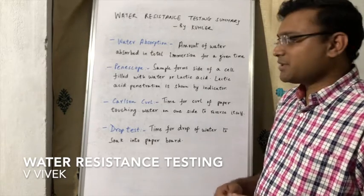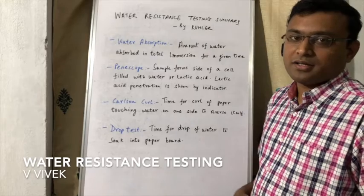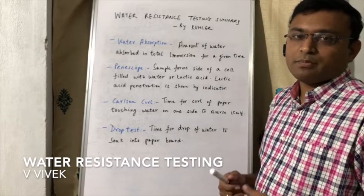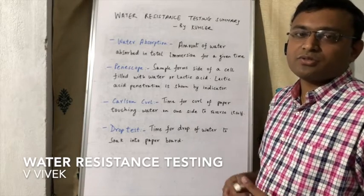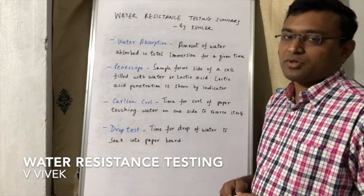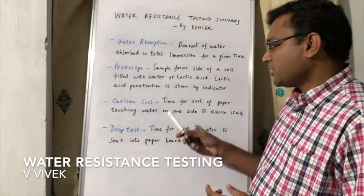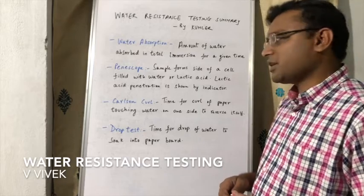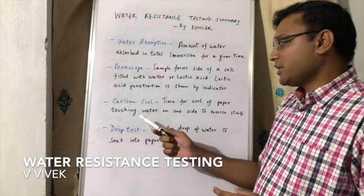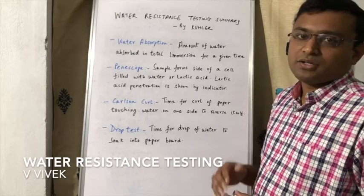The third test is the Carlson curl. We are all aware that paper tends to curl when it is moistened on one of its surfaces. The time required for the curl of paper touching water on one side to reverse itself is measured and noted.